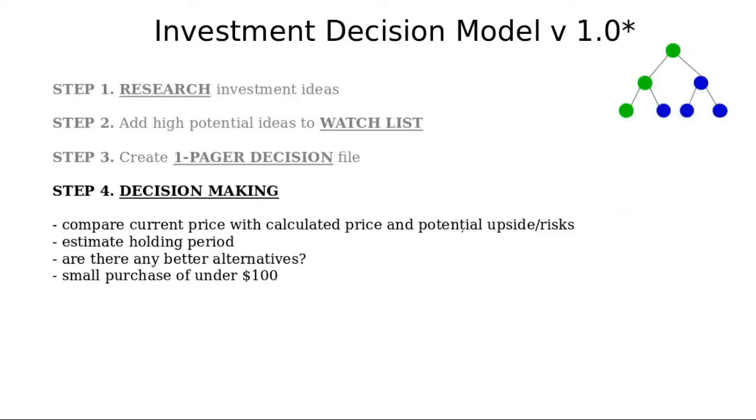Next, you have to make the decision. This can be done by comparing the current price with the calculated price from the one-pager decision file. This is known in the value investing side as the intrinsic value of the company. Also, look at the potential upside and risk. First, try to estimate the holding period.